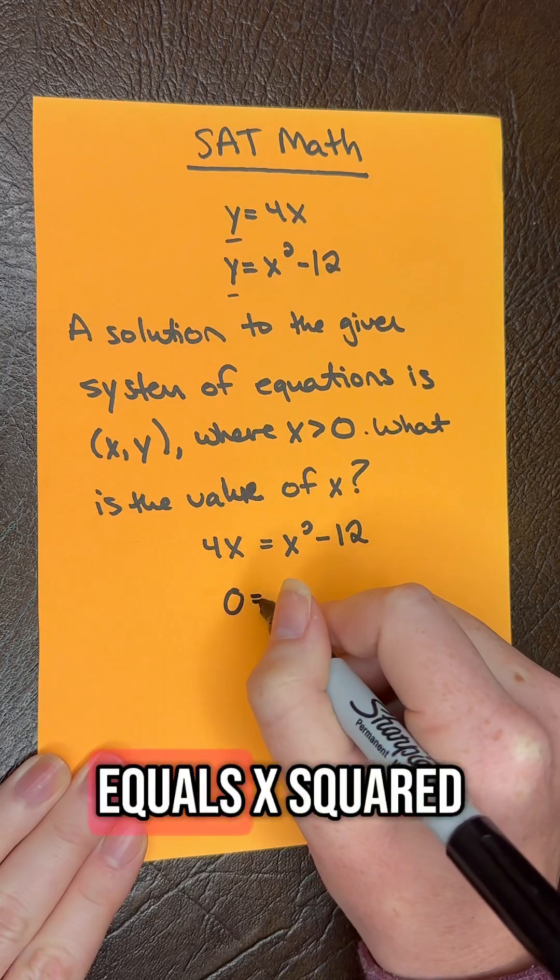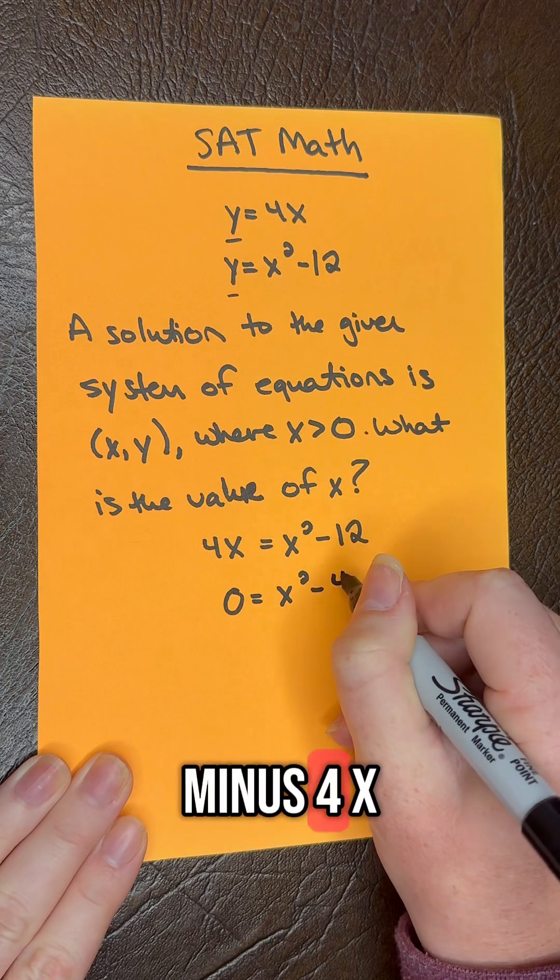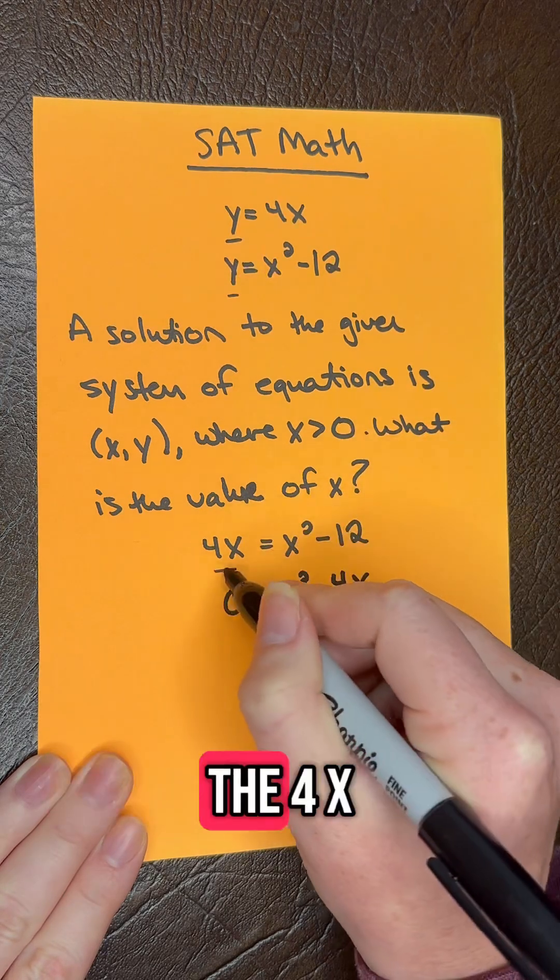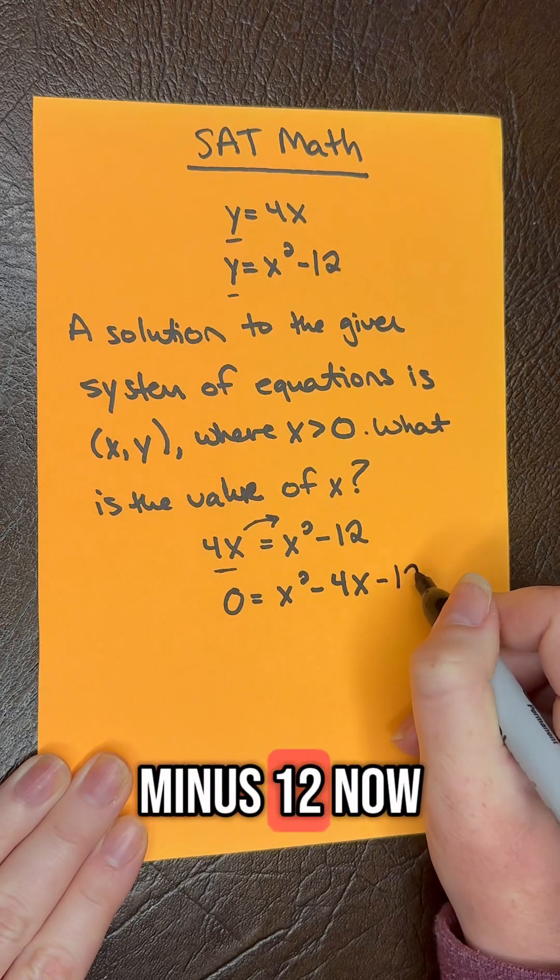So you're going to have 0 equals x squared minus 4x, because we're moving the 4x to this side of the equation, minus 12.